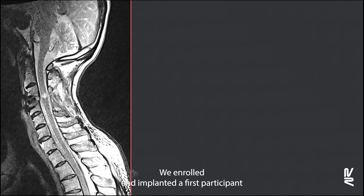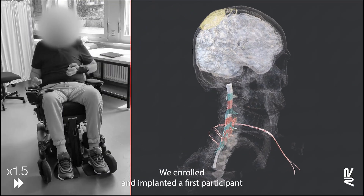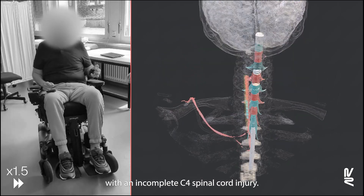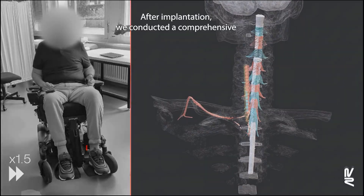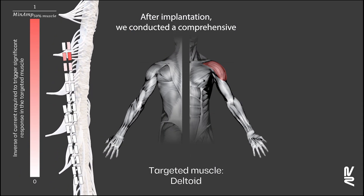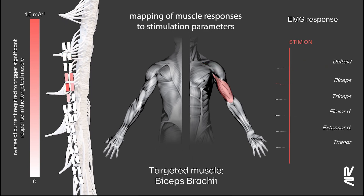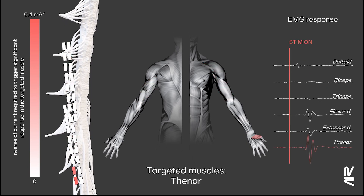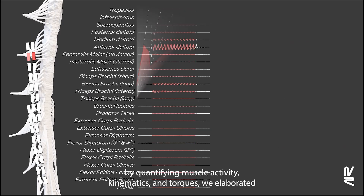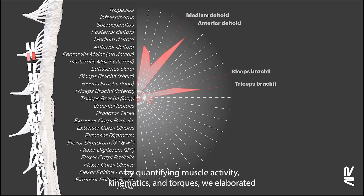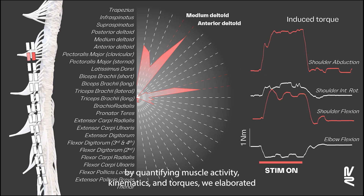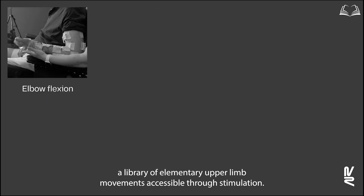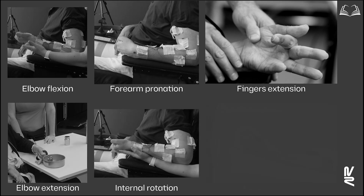We enrolled and implanted a first participant with an incomplete C4 spinal cord injury. After implantation, we conducted a comprehensive mapping of muscle responses to stimulation parameters. By quantifying muscle activity, kinematics, and torques, we elaborated a library of elementary upper limb movements accessible through stimulation.